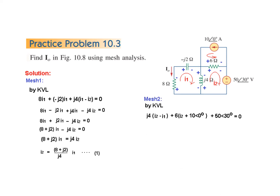For mesh two, we again start from the same corner: j4 times (i2 minus i1), then 6i2. Now the 10-ampere current — we use a plus sign because both currents are going in the same direction, left to right. Then the voltage source 50∠30°. We arrange and collect like terms: i2 terms, i1 terms, and the constant terms.